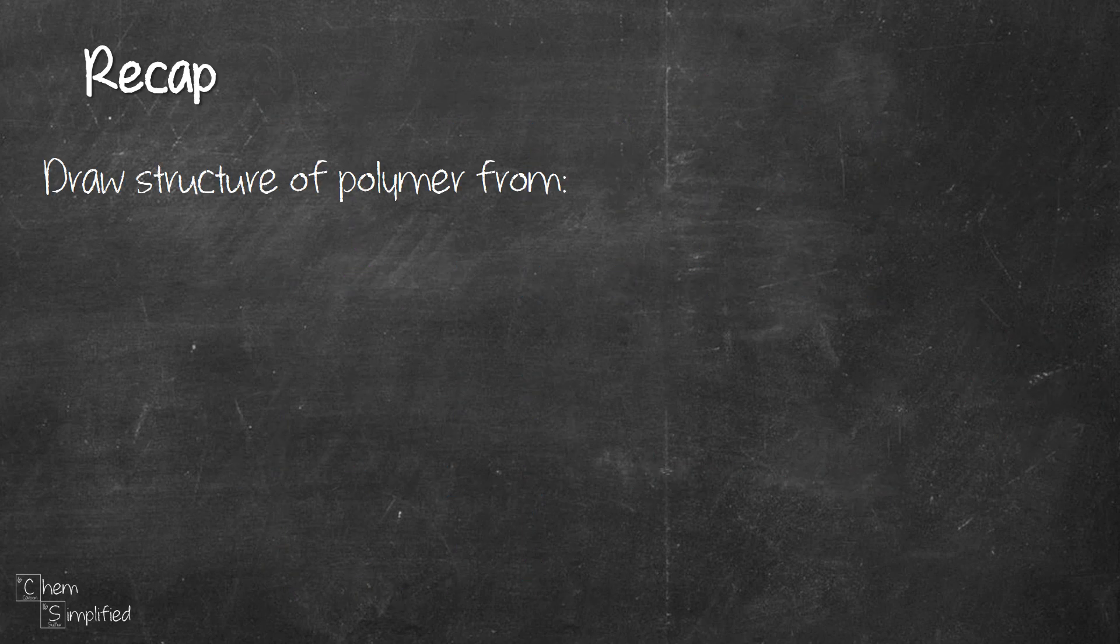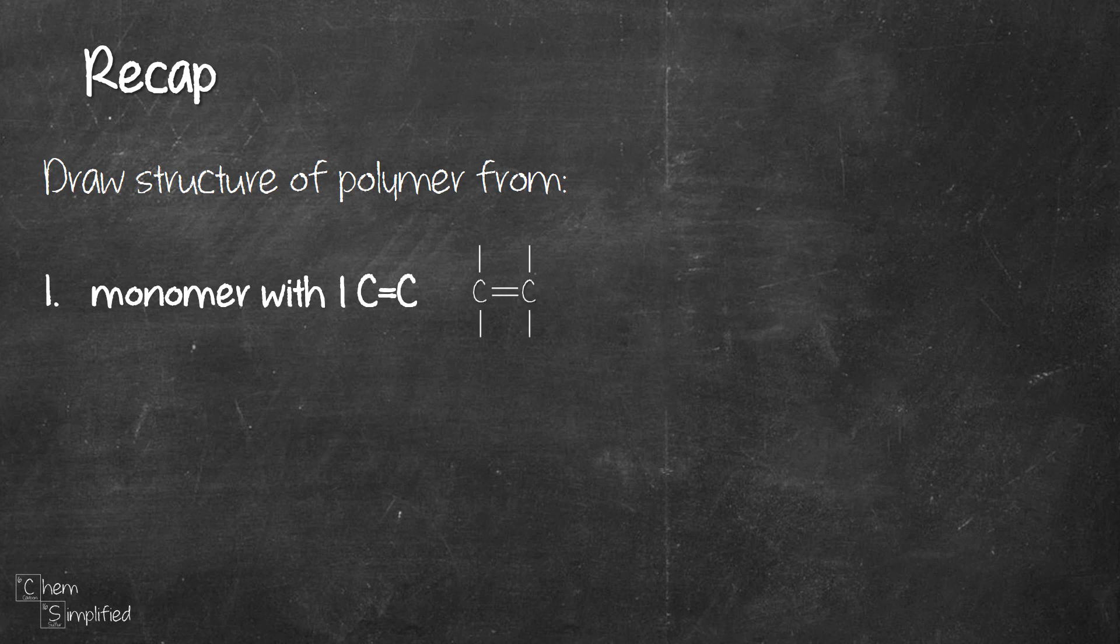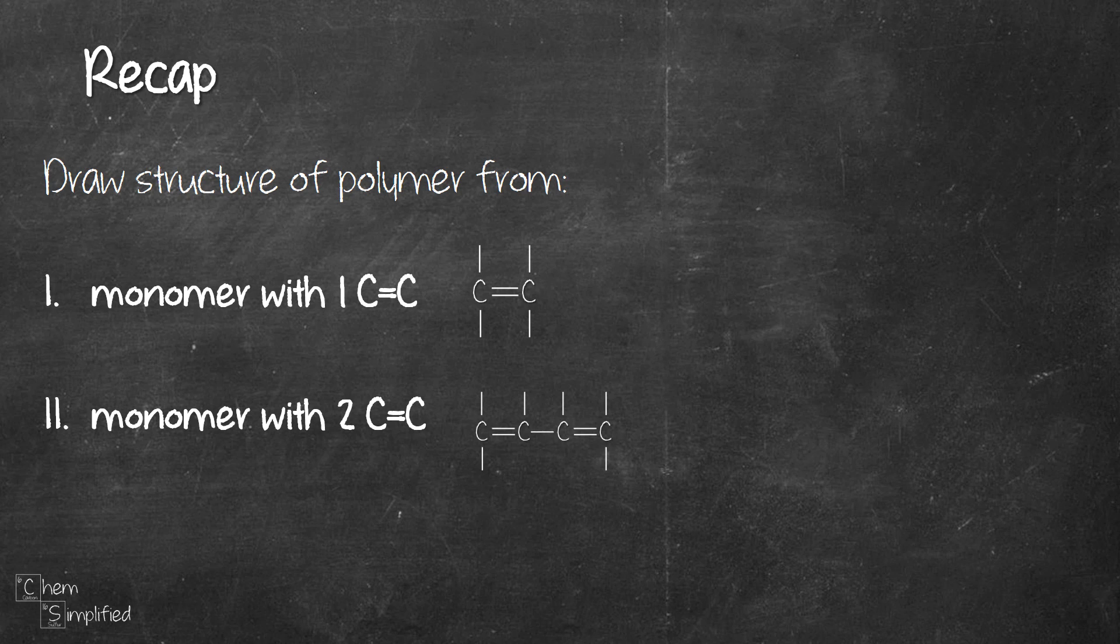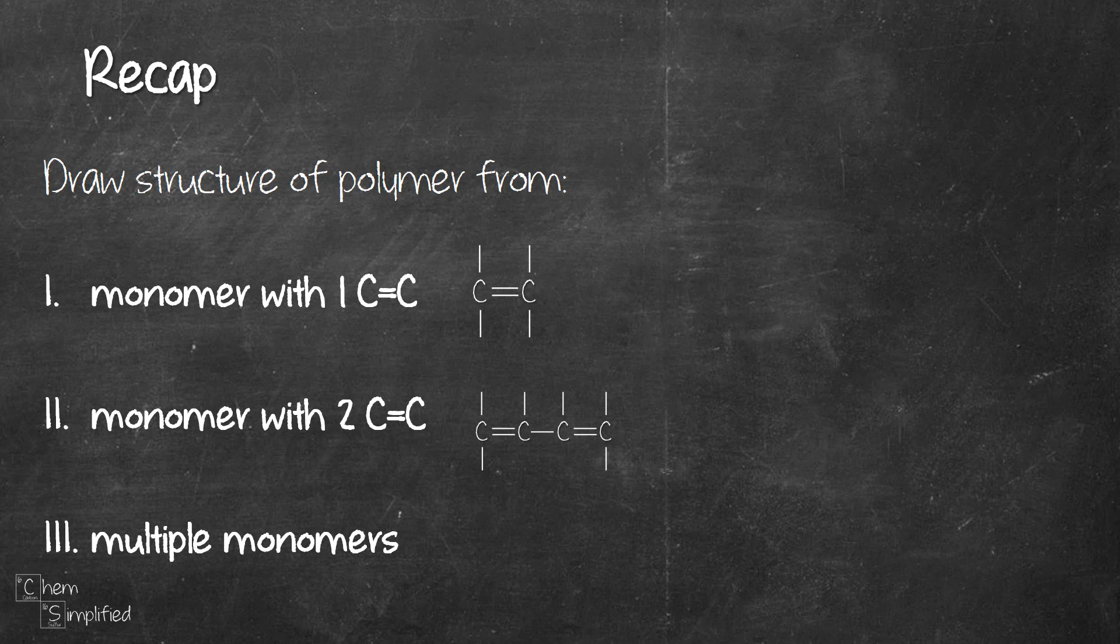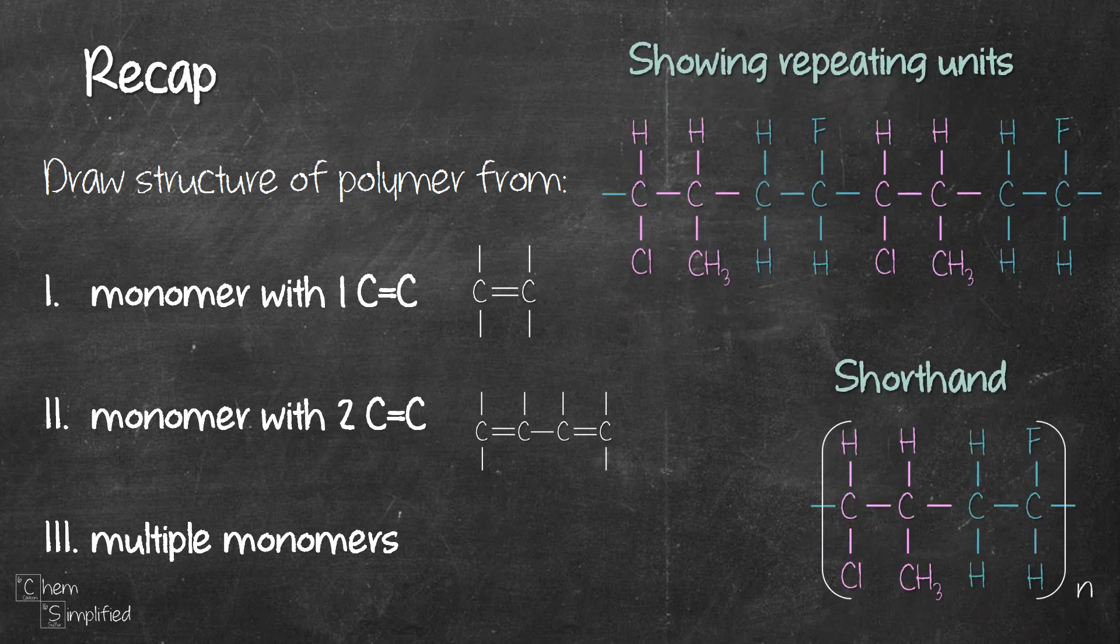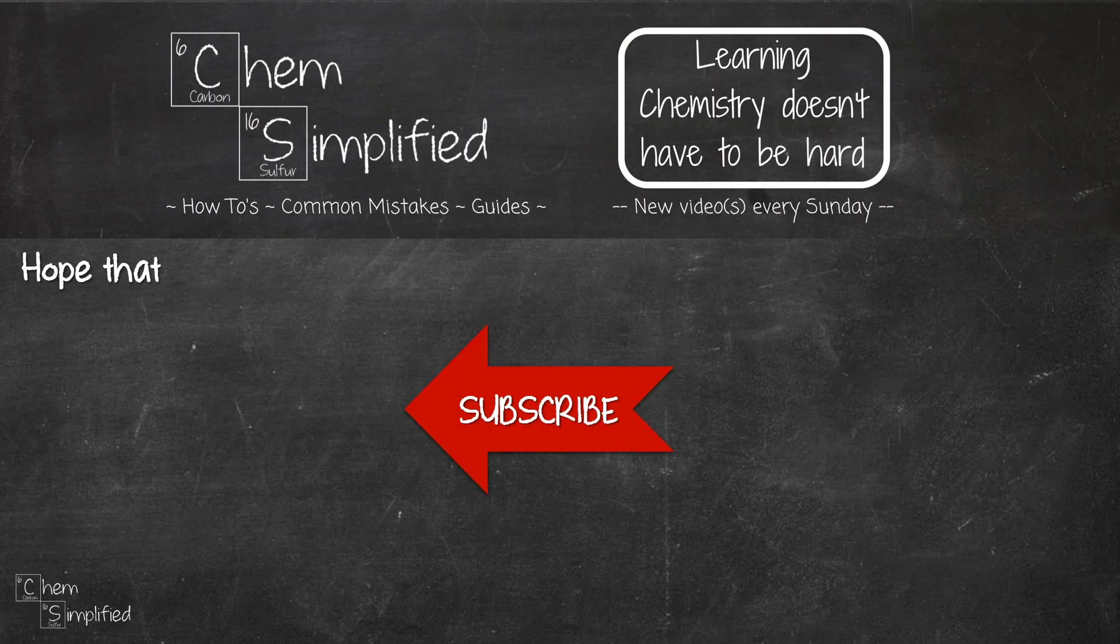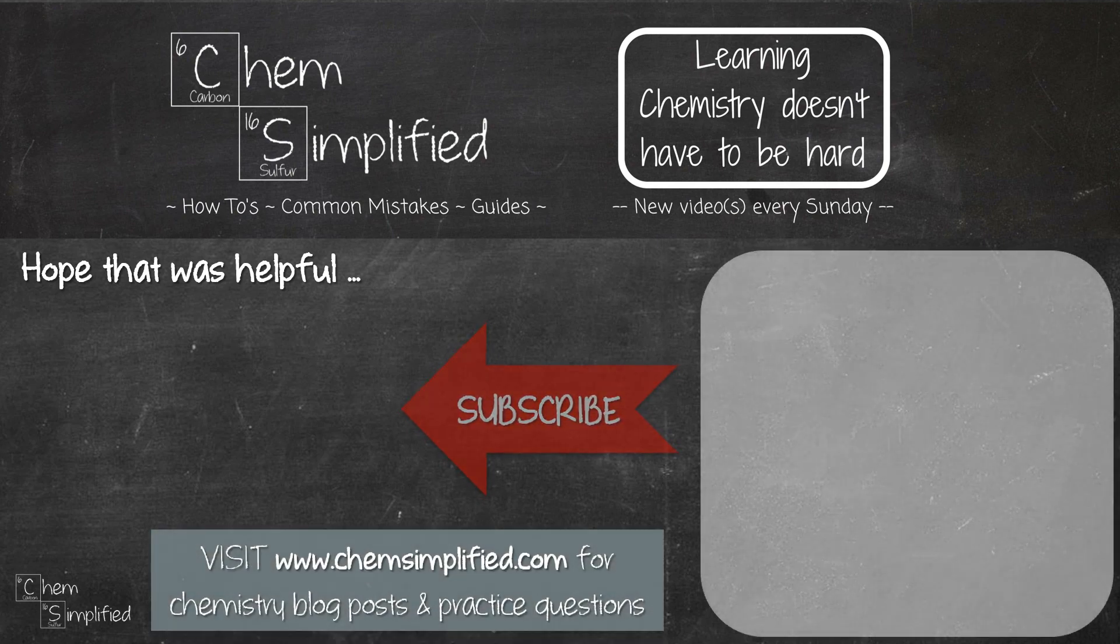To recap, we drew polymers from three types of monomers, one with C=C double bond, another one with two C=C double bonds. Don't forget to place the bonds on top and bottom of the carbons out of the way. Lastly, we drew a copolymer where we have two monomers alternating with each other. We can present the structure in two ways, showing repeating units or shorthand form. Don't forget the open-ended bonds in both forms. I hope you find the video helpful. Do subscribe. Thanks for watching and I'll see you in the next video.